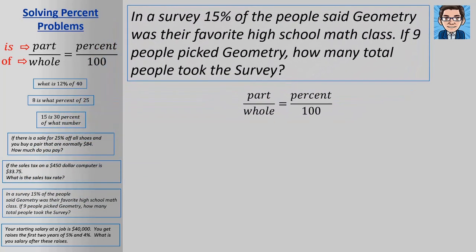Okay, the next problem says in a survey, 15% of people said geometry was their favorite high school math class. If nine people picked geometry, how many total people took the survey? So we know the part is 9. What we don't know is how many total people took the survey. So that's the whole. That's the unknown.